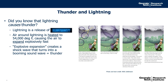That explosion is what we hear as thunder. An interesting thing is that the light from the lightning travels much faster than the sound from the thunder. So when we see lightning, we can count the number of seconds until we hear the thunder and determine how far away that lightning is. Thunder travels about a mile every five seconds.